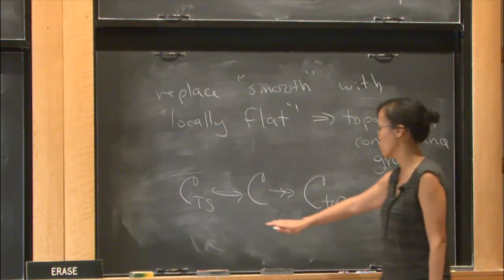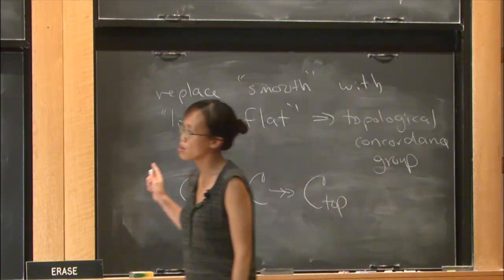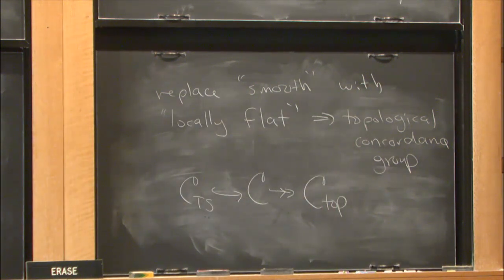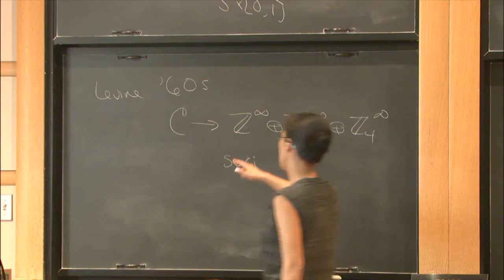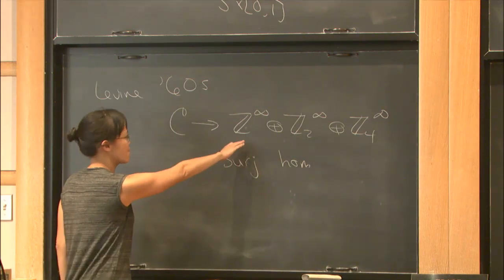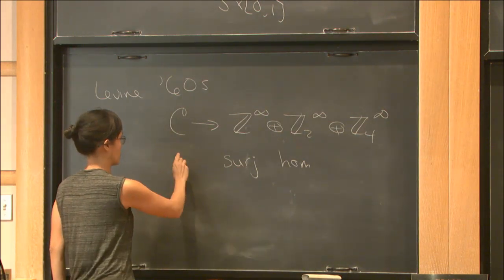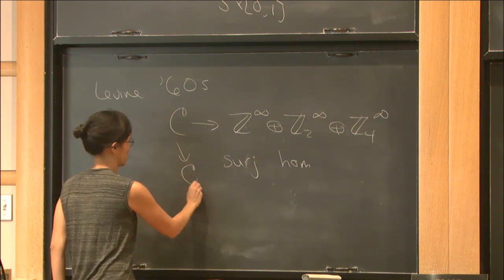If we want to understand this kernel, you might wonder what Levine's homomorphism tells us about that kernel. It turns out his homomorphism is defined in terms of certain linking forms on surfaces, so in particular, it factors through the topological concordance group.